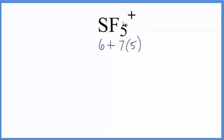And then this positive charge here for the ion, that means we've lost an electron. Electrons are negative, when you lose a negative charge you become positive. So we're going to lose an electron here. So we have 35 plus 6, that's 41 minus 1, 40 total valence electrons for the SF5 positive Lewis structure.